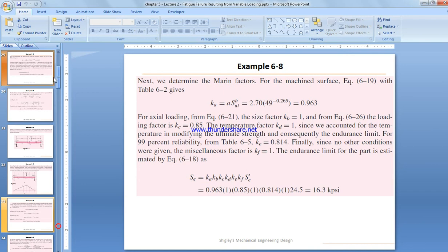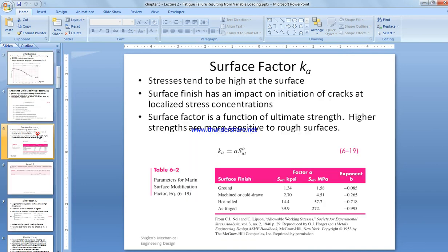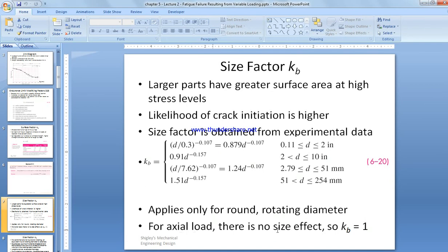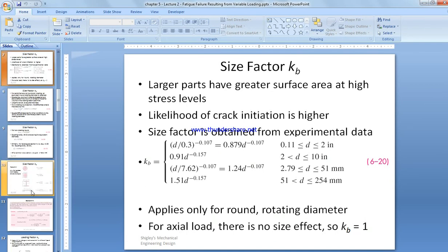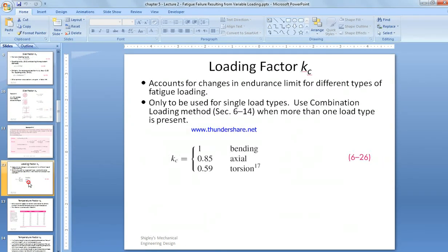We go back to find the value of KB, which is the size factor. For axial loading, KB is equal to 1. We need to find the value of KC, which is the loading factor. For axial, KC is equal to 0.85.